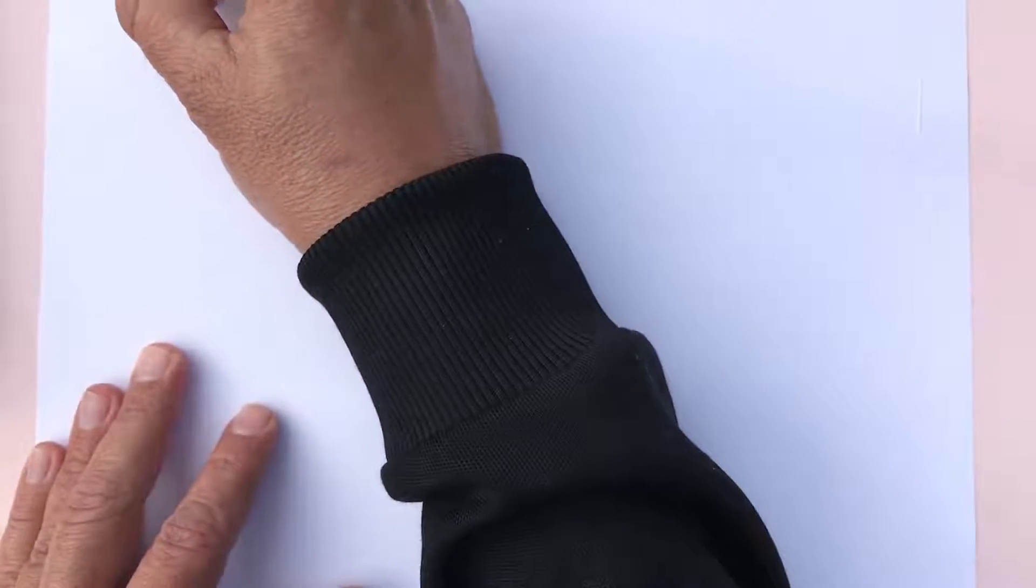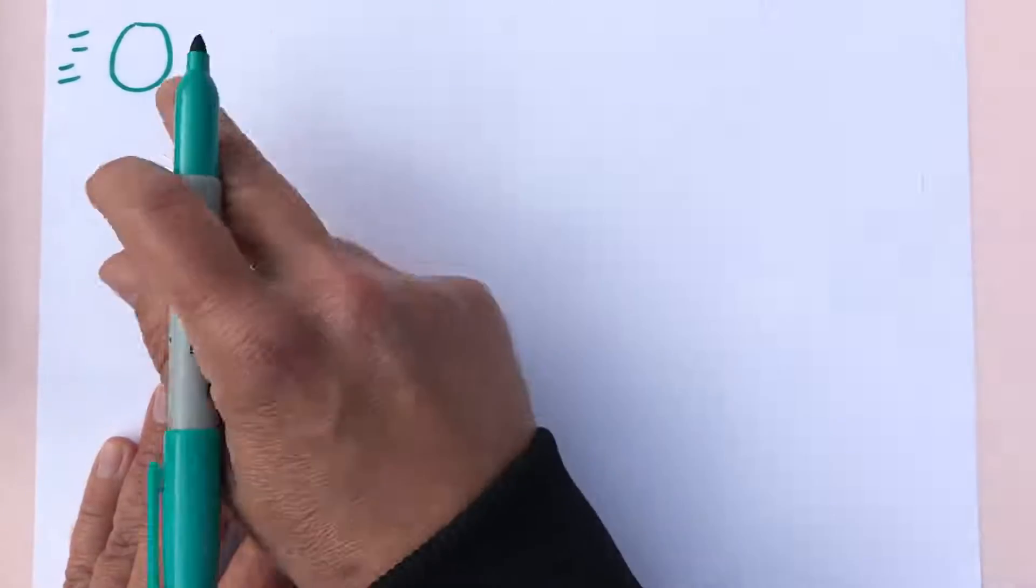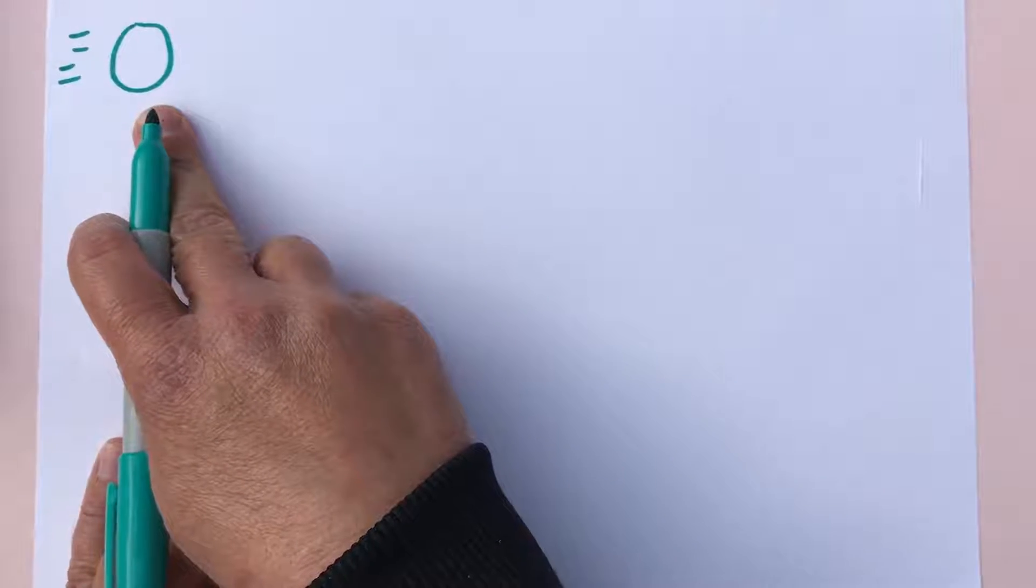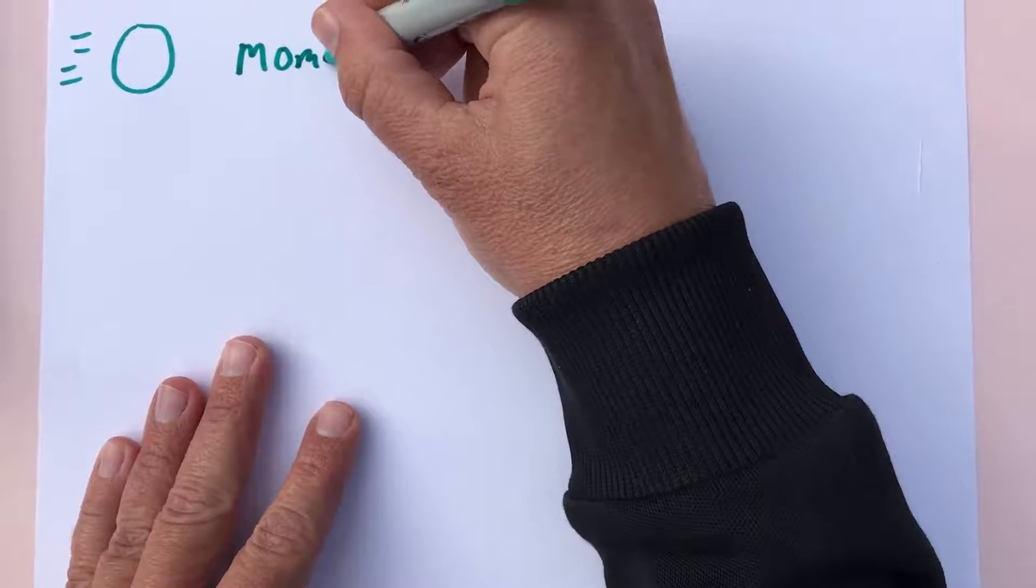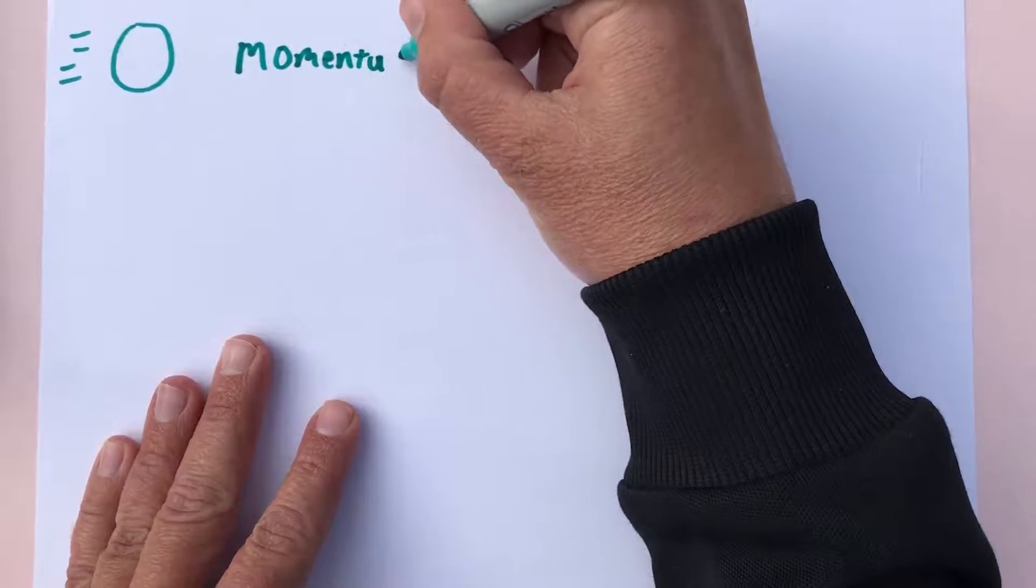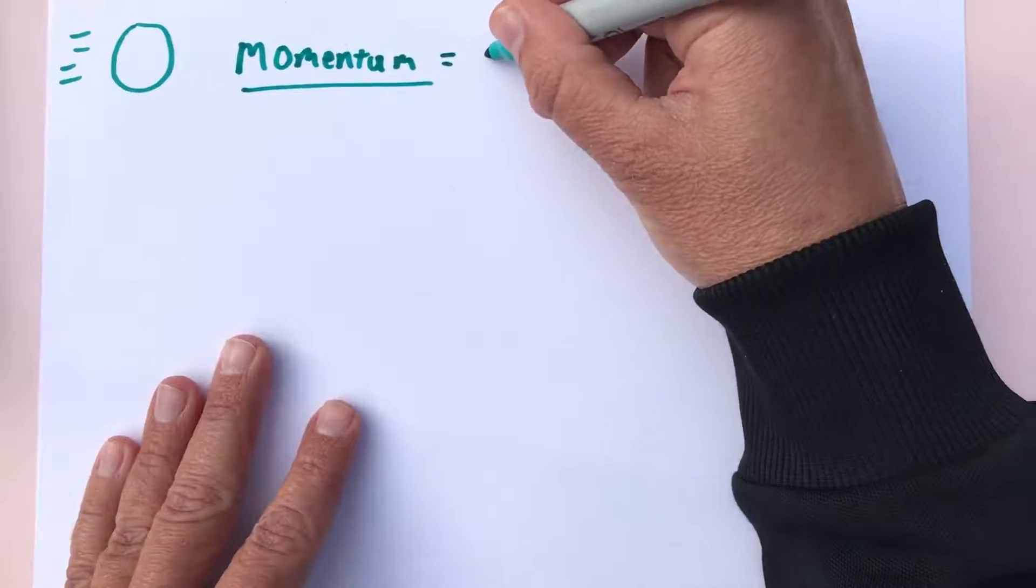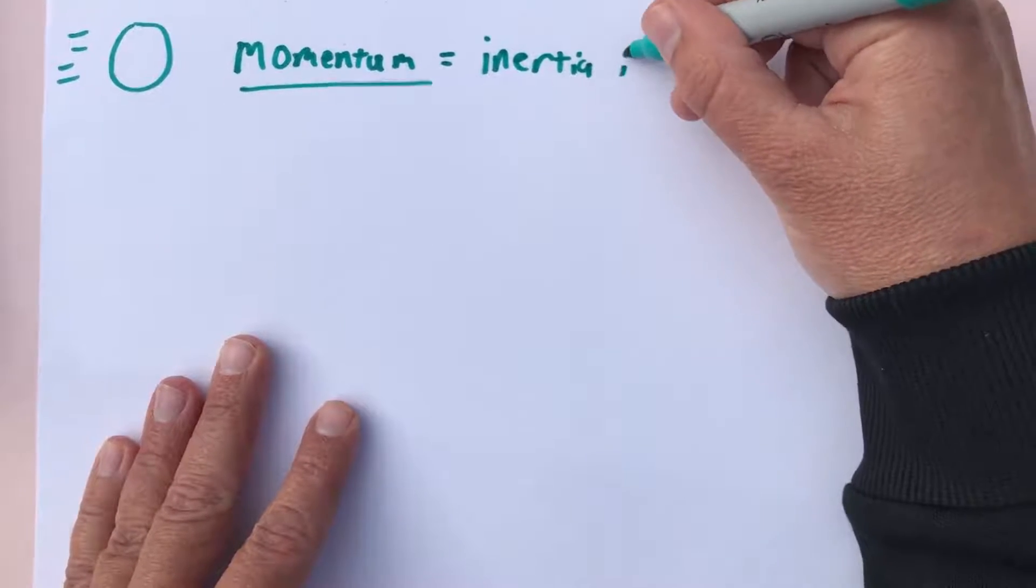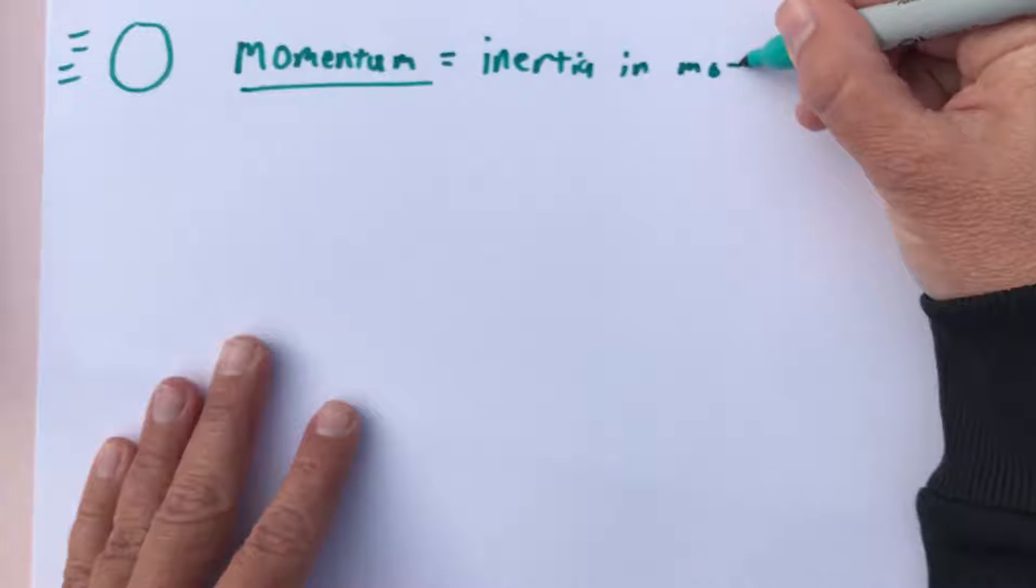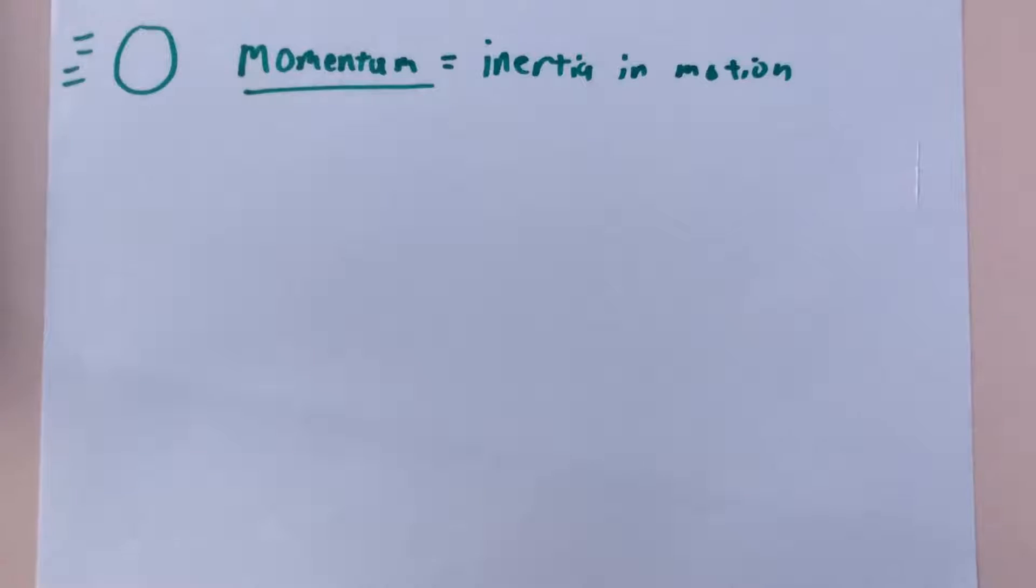So we already know that if I throw something like a ball or bowling ball, if it's moving it wants to stay moving, and this is what momentum has to deal with. We already knew that an object at rest wants to stay at rest and an object that's moving wants to stay moving, and that's called inertia. But momentum is basically just inertia in motion, so we're just focusing on the moving part of it there.